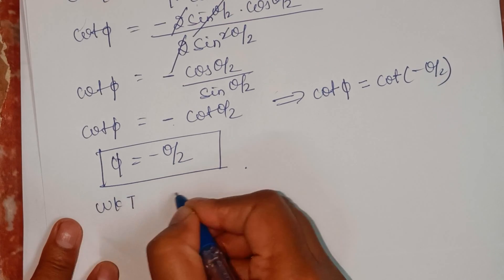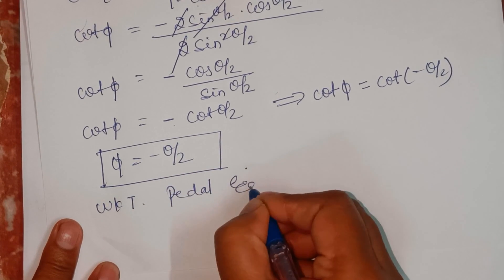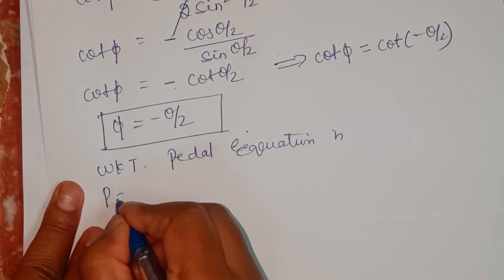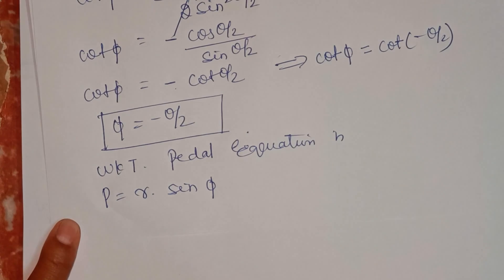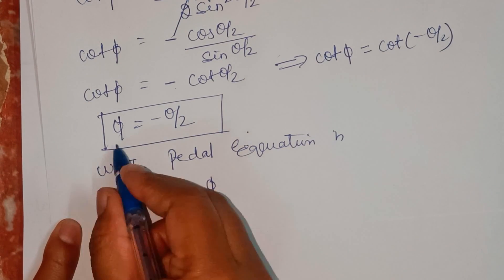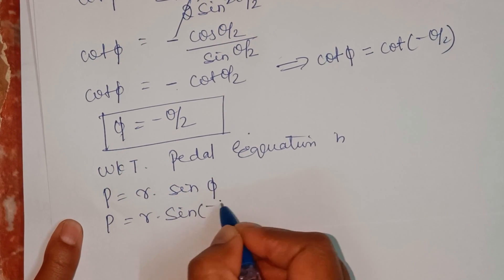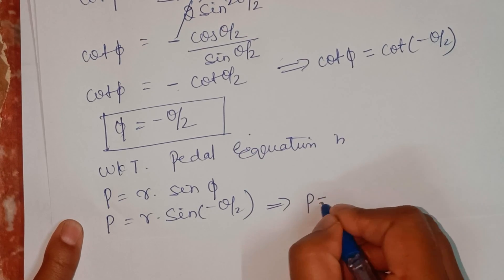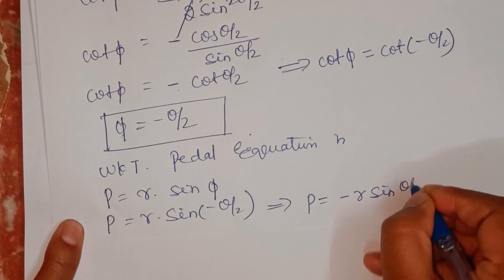We know the pedal equation is p equals r into sin φ. Substituting the value of φ: p equals r into sin(−θ/2), which gives p equals minus r sin(θ/2). But we still have theta in the expression, so we need to eliminate theta.